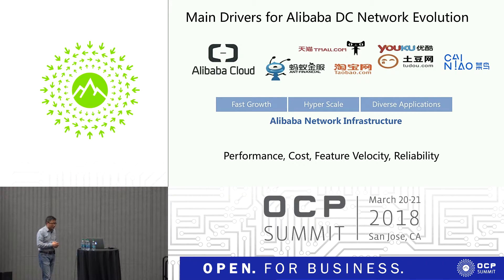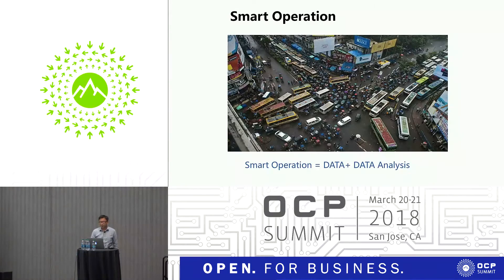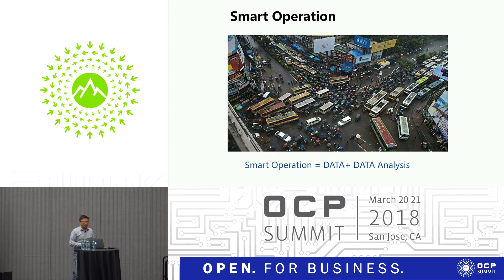One important thing is about network operation. Our network operation team has tremendous pressure to operate this network. The topic for today is smart operation. There's no magic — it's about getting more data from your network, using big data analysis to analyze it, and making your operation smarter.